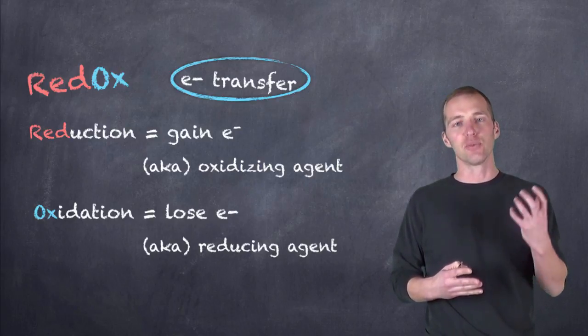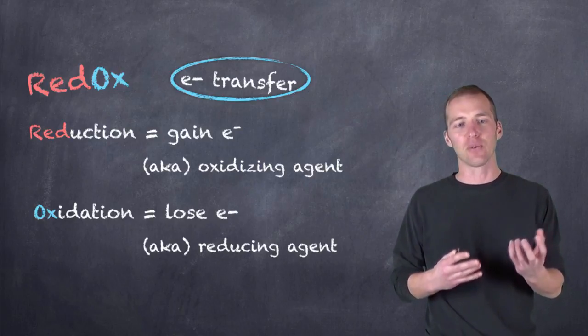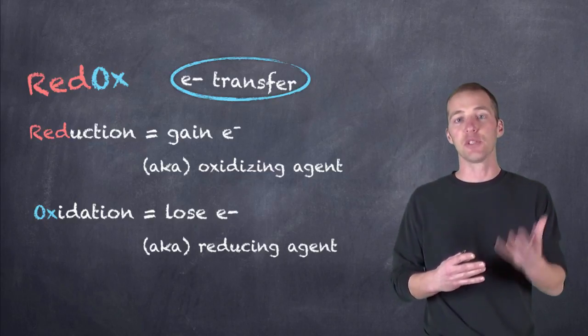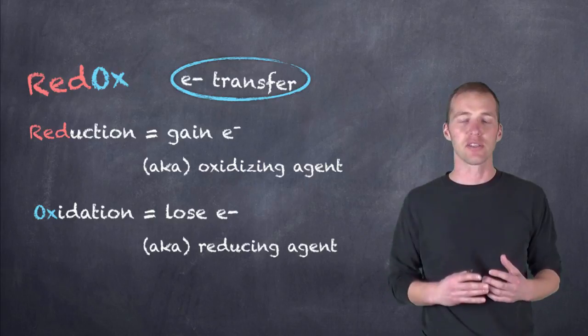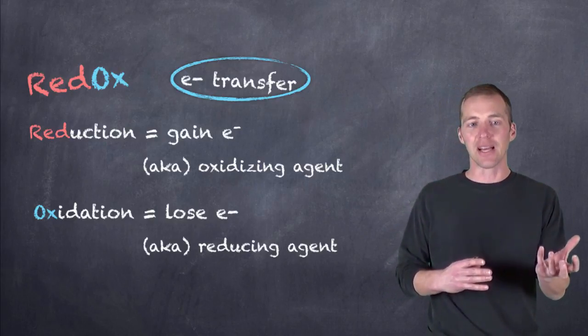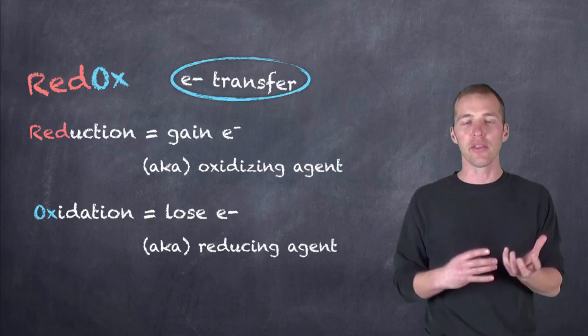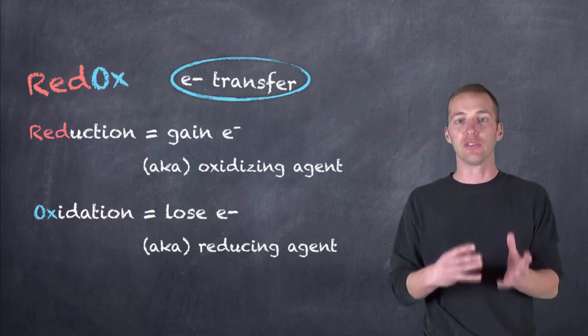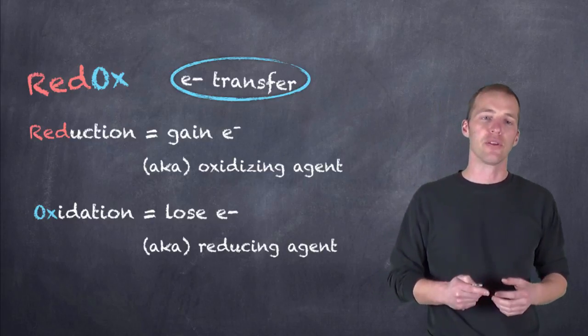So since this substance that is being reduced, that is gaining electrons, is ultimately oxidizing something else, we say that the substance being reduced is also known as the oxidizing agent. And since the substance that's being oxidized is therefore reducing another compound, we say that it is the reducing agent because it ultimately is going to reduce the other compound.